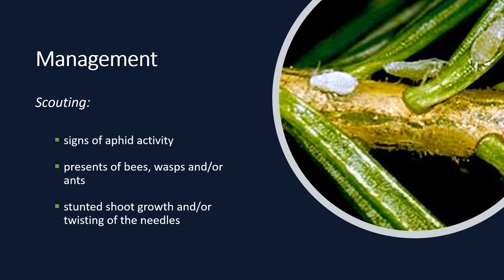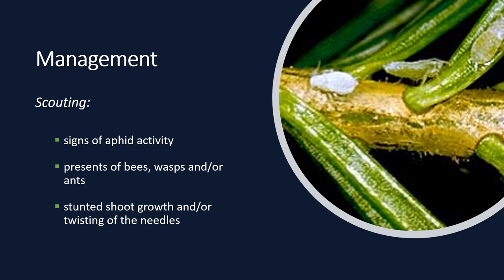Beat the branches over it several times. Using a hand lens, scan the paper looking for the tiny soft-bodied insects, checking to see if they have cornicles protruding from their abdomens. Count the total number of aphids. The treatment threshold is low — if more than three aphids are found on more than two trees, treatment is probably necessary.